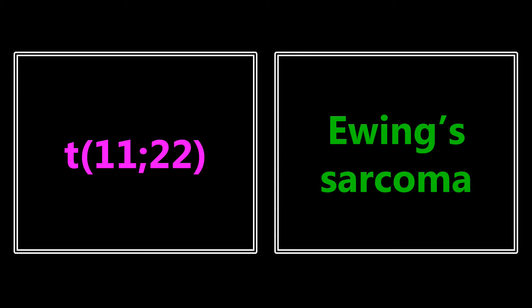Translocation between chromosomes 11 and 22 is going to be Ewing sarcoma. People like to remember that 11 plus 22 equals 33, and that's Patrick Ewing's old number — he was a famous basketball player. Whatever you've got to do to memorize this.